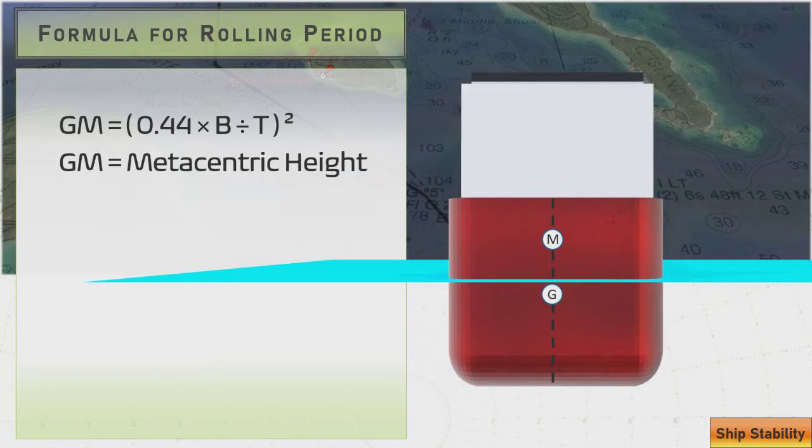So the GM informs us a little about a ship's general rolling behavior. If you have a larger GM, if the distance is greater, then you have a stiff or snappy rolling motion. Whereas if you have a shorter GM, if the M is a lot lower relative to the G, you have a tender or slow and easy roll.